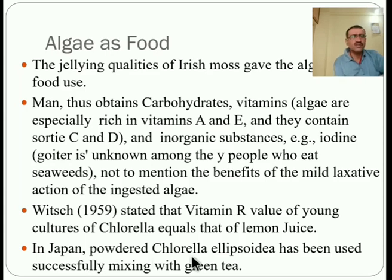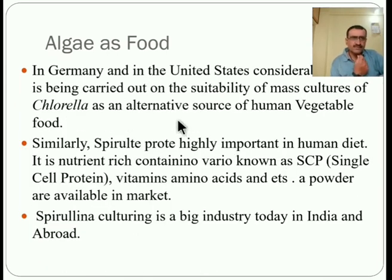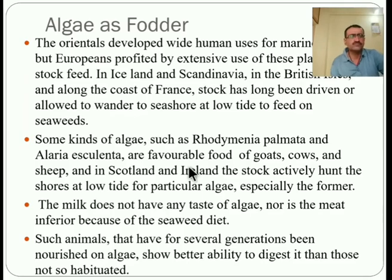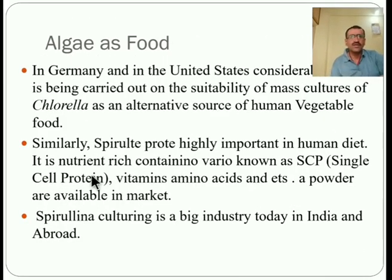In Japan, powdered Chlorella ellipsoidea has been successfully mixed with green tea and is important for digestion. In Germany and the United States, considerable research has been carried out on the suitability of mass culture of Chlorella as an alternative source of human vegetable food. Spirulina is similarly highly important in the human diet.